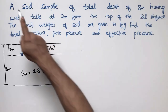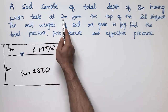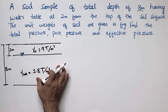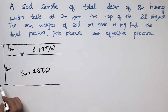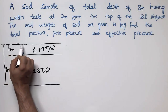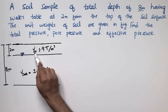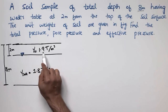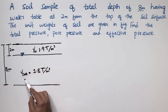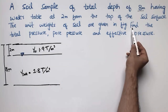Let's start with the description of the numerical problem, which states that a soil sample has a total depth of 8 meters with the water table at 2 meters from the top of the soil surface, as shown in the figure on the left side. The unit weight above the water table for the 2-meter depth is 1.9 ton per cubic meter, and below the water table the unit weight is 1.8 ton per cubic meter.